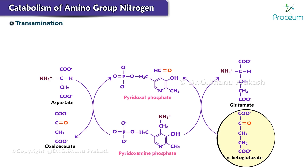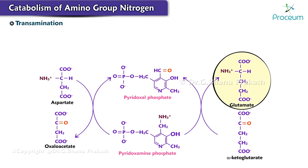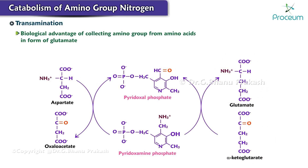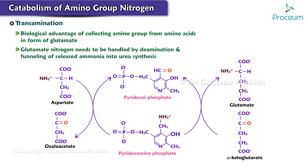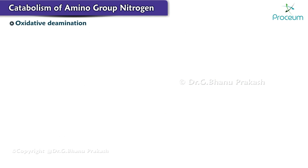Generally, alpha ketoglutarate is the acceptor of the transferred amino groups of various amino acids, and in the process it is converted to glutamate, which acts as a collecting point for the alpha amino groups. The biological advantage of collecting amino groups from amino acids in the form of glutamate is that only glutamate nitrogen needs to be handled by deamination and funneling of released ammonia into urea synthesis.